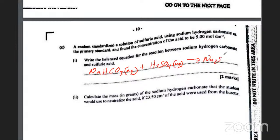The balanced equation is: sodium hydrogen carbonate plus sulfuric acid gives sodium sulfate plus carbon dioxide plus water. You need a coefficient of 2 in front of sodium hydrogen carbonate and a 2 in front of water.